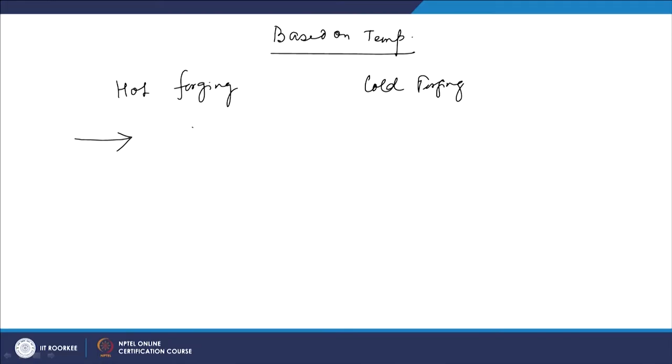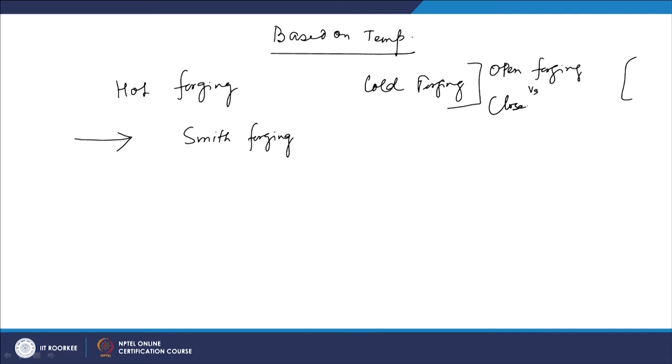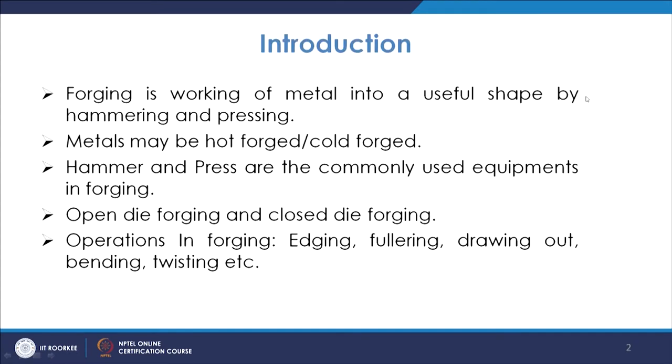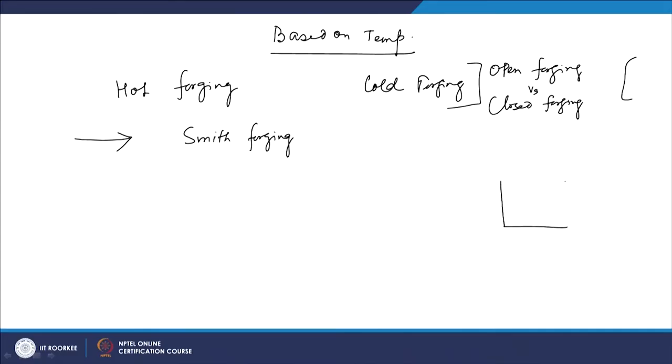When we classify based on what way the forging process is carried out, we come across certain terms. We have smith forging, which is a type of open forging. Let us talk about open die forging versus closed die forging. Open die forging means the dies are flat and open — there is no constraint from any side. The metal is placed on the anvil and forged freely.